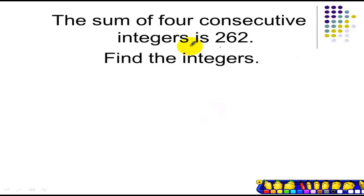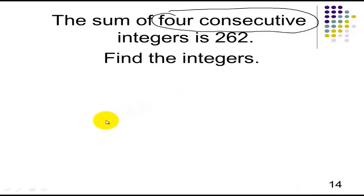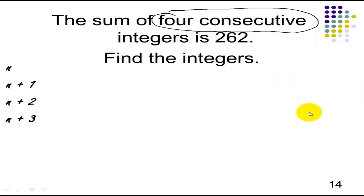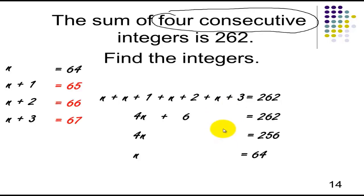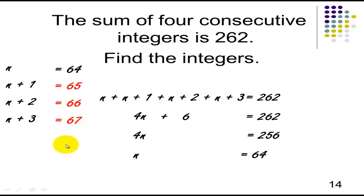Next: the sum of 4 consecutive integers is 262. Find the integers. We have 4 consecutive integers, so we use n, n plus 1, n plus 2, n plus 3. Add each of these expressions: n plus (n plus 1) plus (n plus 2) plus (n plus 3) equals 262. Pause the video and solve. The answer is 64, 65, 66, 67. And that's our video 2.4.